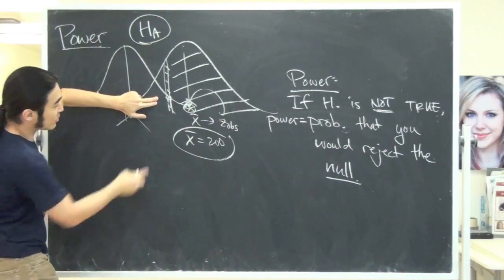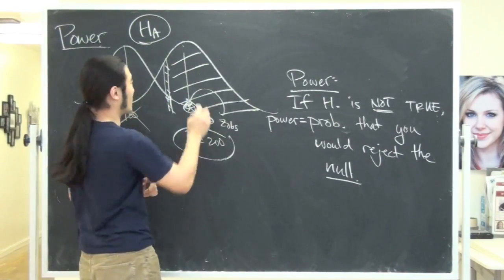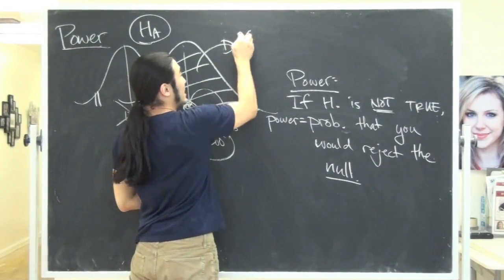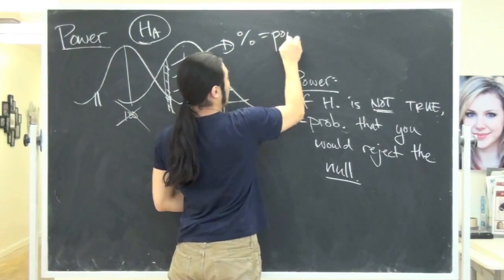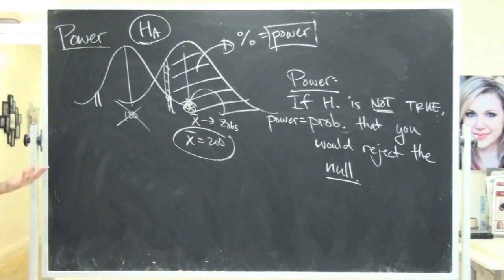If this whole thing represents 100%, then everything to the right of this line represents the probability you do it right. If you got a sample over here, you wouldn't have rejected, so you've done it wrong, or incorrectly. So let's figure this out. So I guess this percentage is really your power.